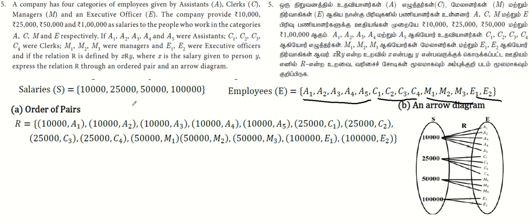Ordered pairs: For 10,000 rupees, there's A1, A2, A3, A4, A5. So (10,000, A1), (10,000, A2), (10,000, A3), (10,000, A4), (10,000, A5). This is X. X is the salary and Y is the person. X is the salary.